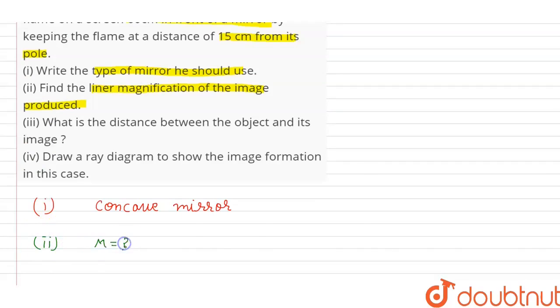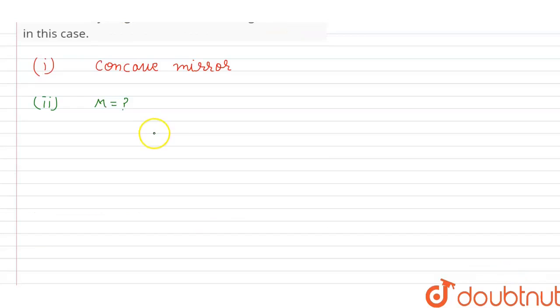We have to find the linear magnification. We are given that the flame is produced 15 cm distance from its pole, so object distance U equals minus 15 cm. Screen is placed 60 cm distance from its pole, so image distance V equals minus 60 cm.